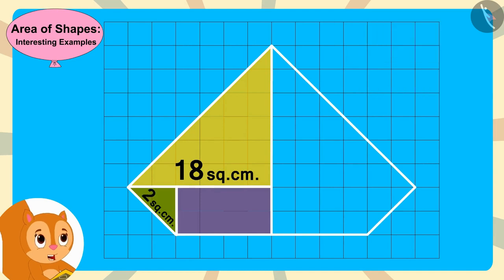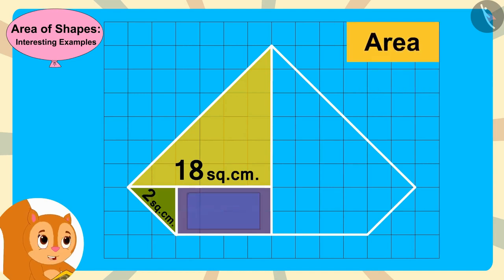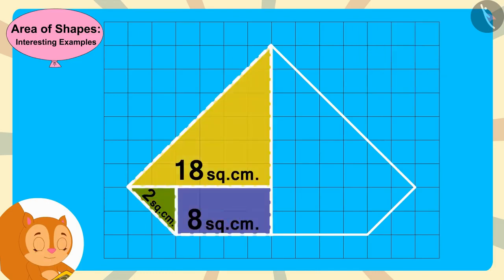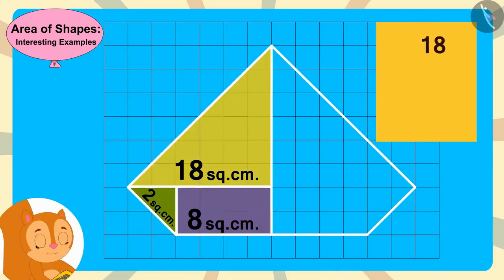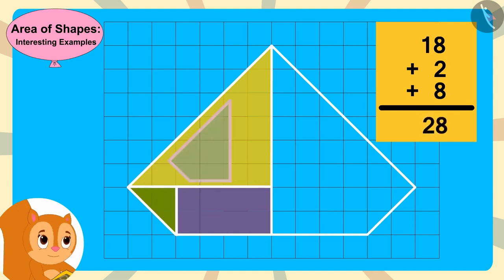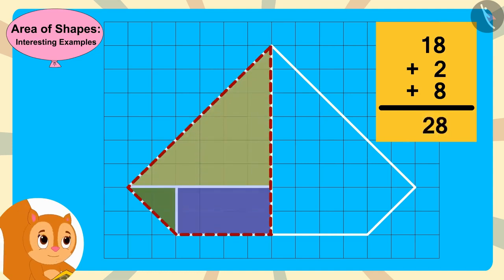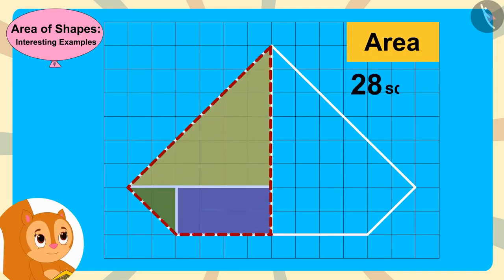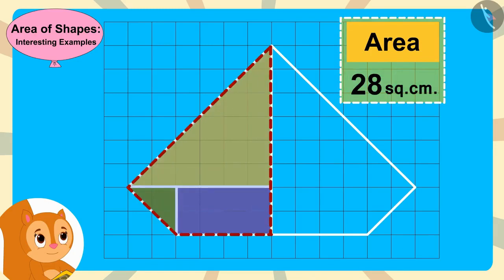And finally, the area of this rectangle is 4 times 2, or 8 square centimeters. By adding the areas of all these shapes, we get the area of this part of the diamond. The area of this part of the diamond is 28 square centimeters.